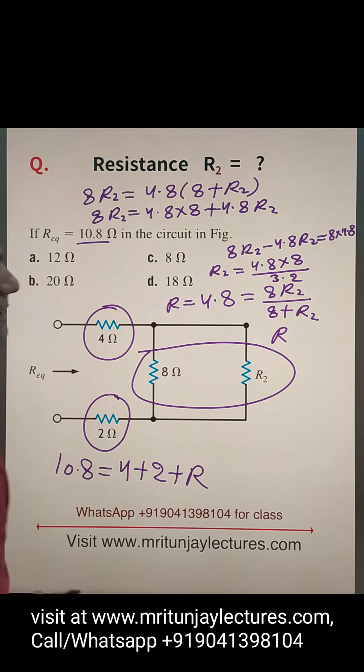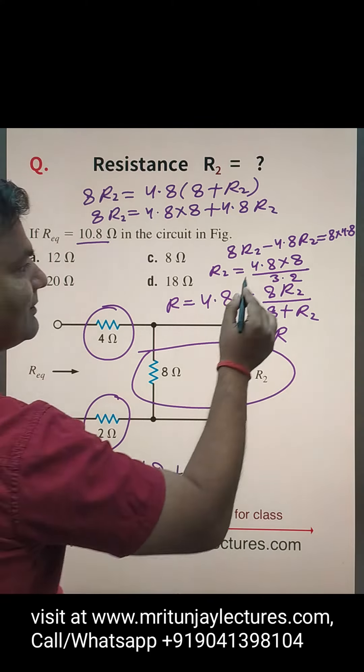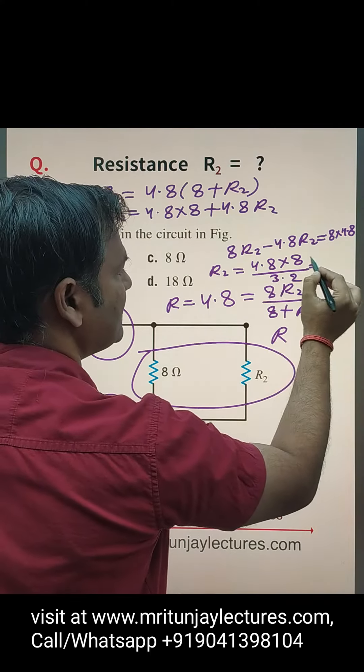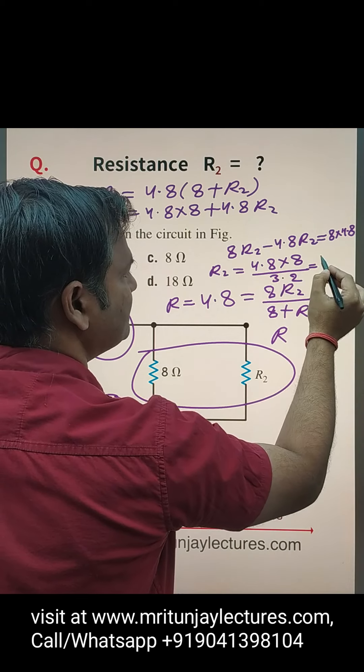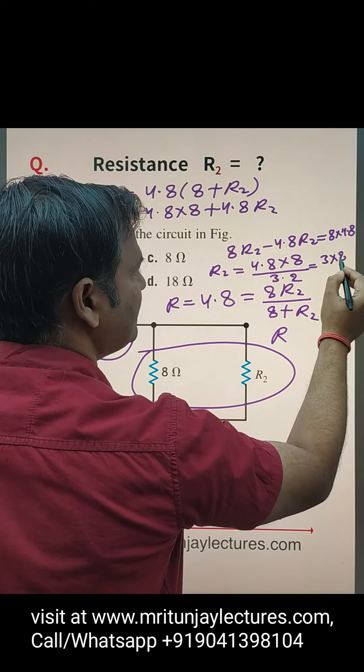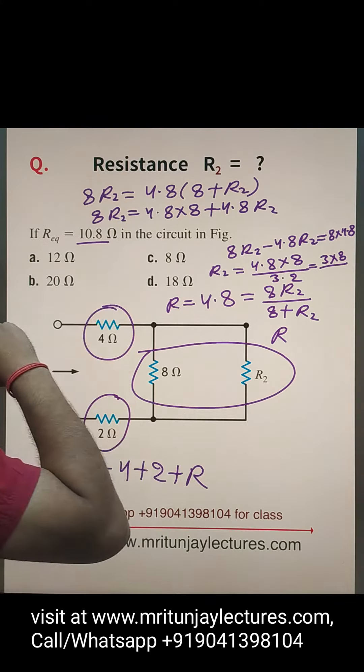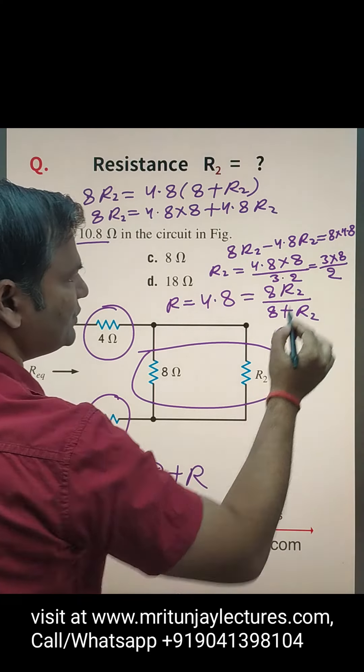So 4.8 into 8 divided by 3.2 basically. Working through the calculation steps.